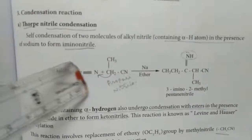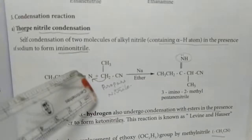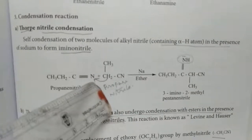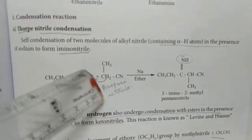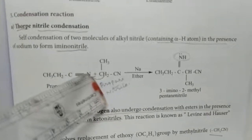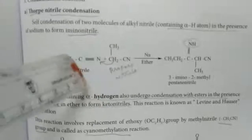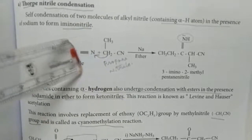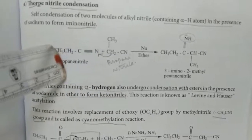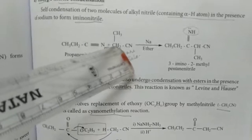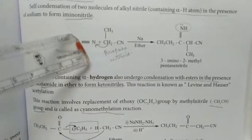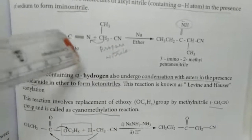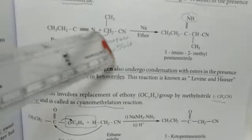The nitrile group is C triple-bonded to N. When it is treated in a condensation reaction, one more molecule of the same nitrile compound — propanenitrile — reacts. The alpha-hydrogen of one nitrile compound is transferred to the nitrogen of the other nitrile compound.